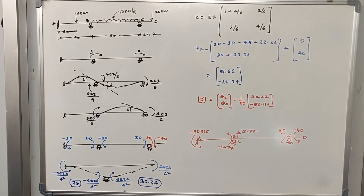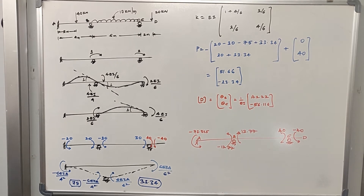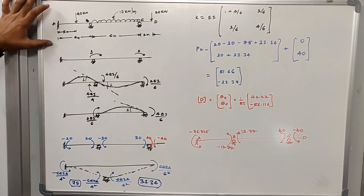In the previous video we solved the continuous beam using the stiffness method. In this video we are going to solve more problems on continuous beams. This problem was already solved using the slope deflection method, and now we will solve the same problem by the stiffness method, so it will be easy for you to verify the end moments. If you find any confusing problem in the stiffness method, you can send those problems to me.